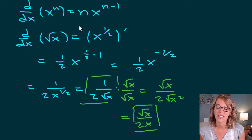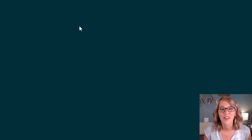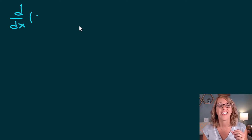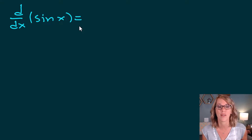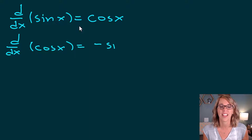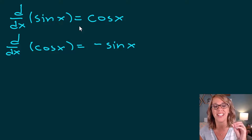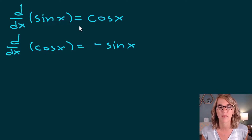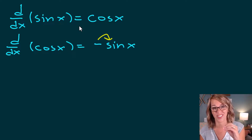Let's look at some really important trig derivatives. I'm going to go through all six trig functions — I strongly recommend you have these memorized; make some flashcards or whatever you need to do, because these come up a lot. Starting with the derivative of sine: that is equal to cosine. The derivative of cosine x is equal to negative sine of x. The negative sign goes with the answer sine of x — that's how I have it memorized.